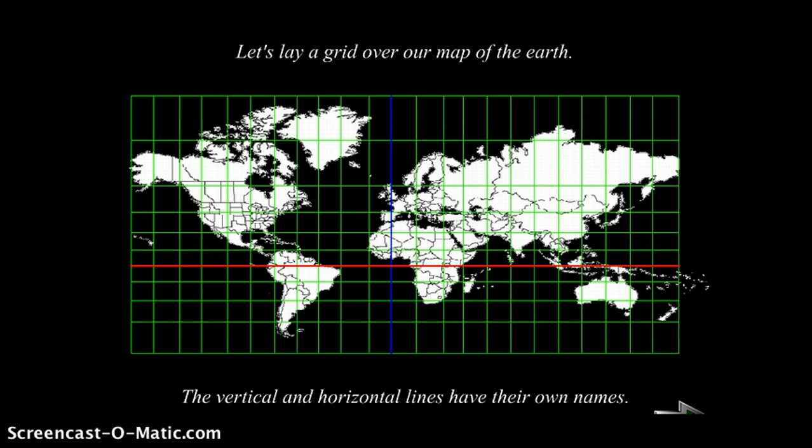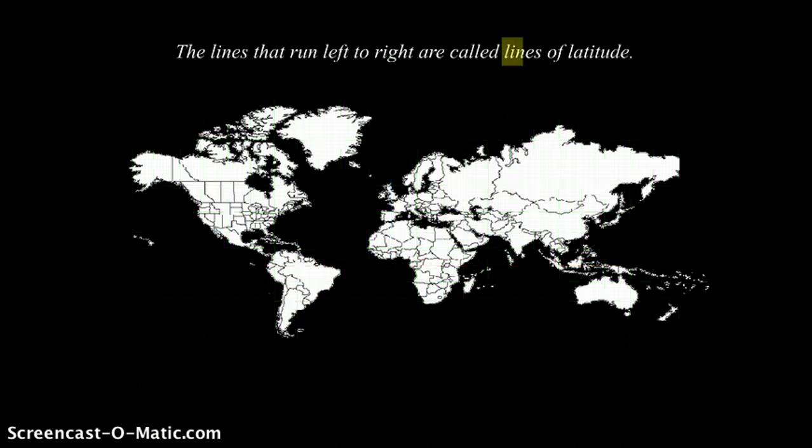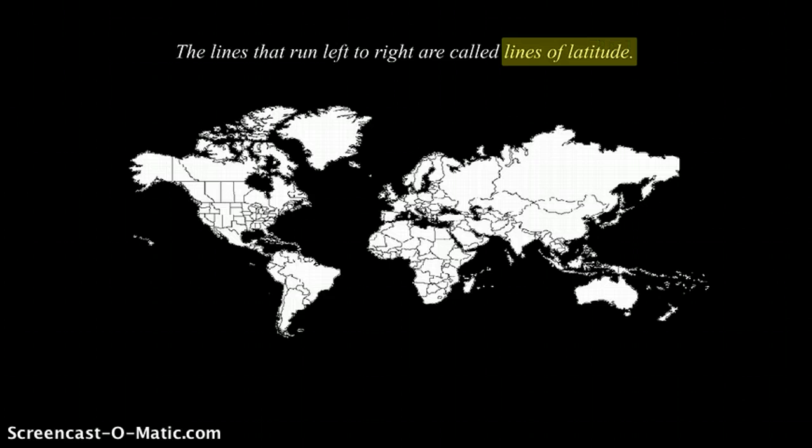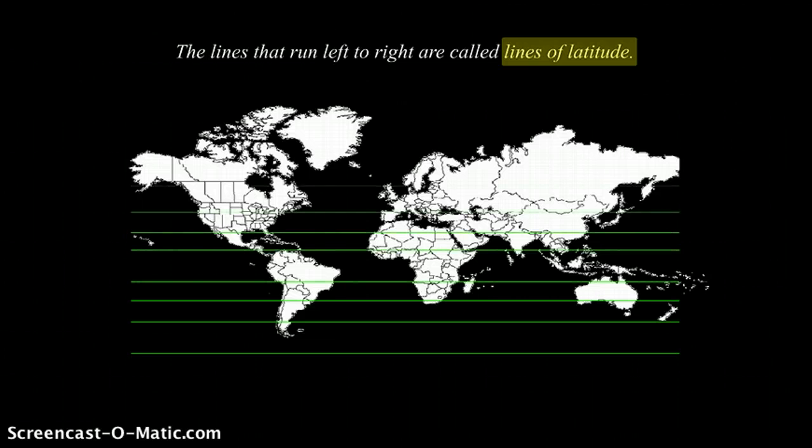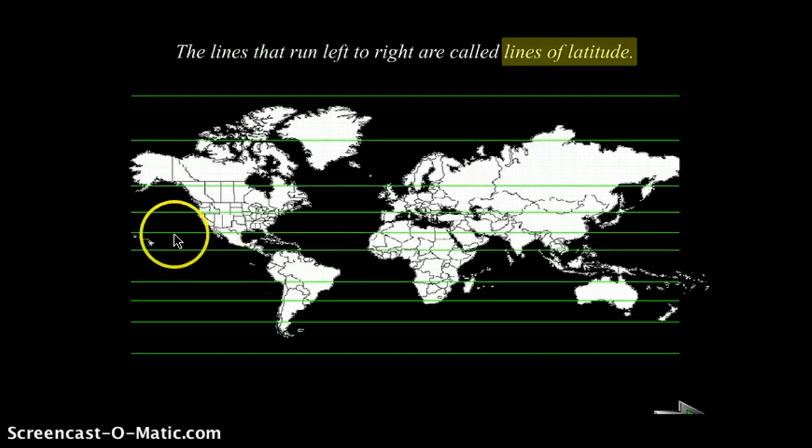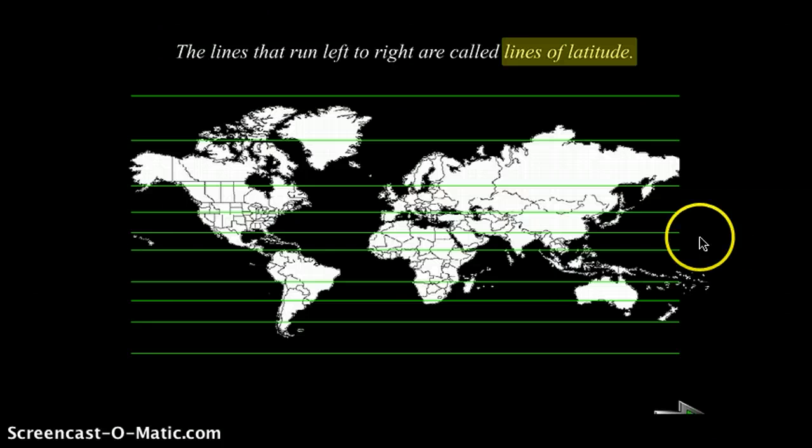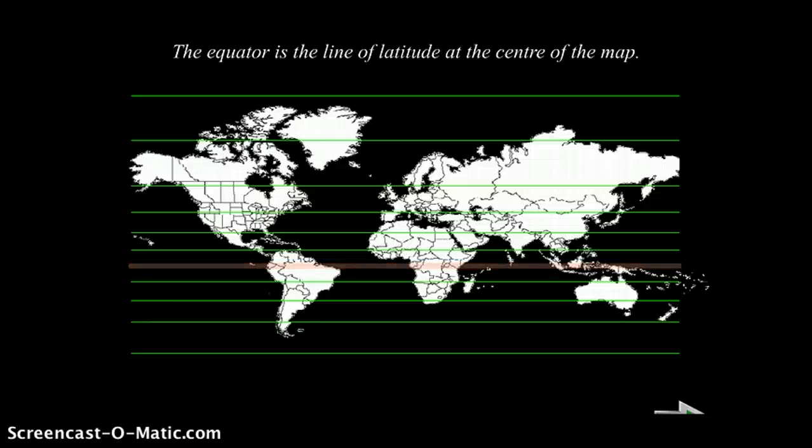Let's lay a grid over our map of the earth. The vertical and horizontal lines have their own names. The lines that run from left to right are called lines of latitude. This is what they look like in the green. They run from left to right. These are lines of latitude. The equator is the line of latitude at the center of the map. It's in red. This is the equator.